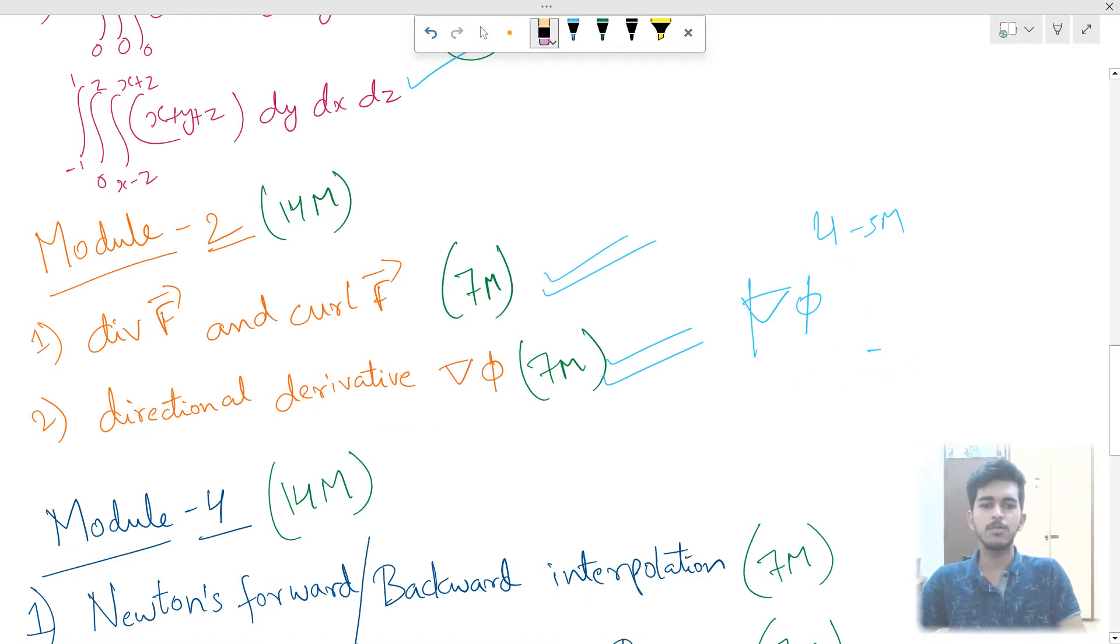And there will be a total of 4 to 5 marks. At least, you can fix the directional derivative. So total in your model 2, the 14 marks in the guarantee.